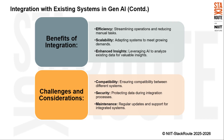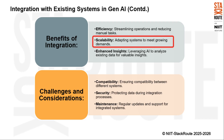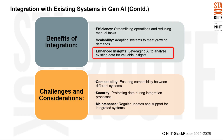The benefits of integration in Gen AI include: efficiency — by streamlining operations and reducing manual tasks, organizations can save time and resources, allowing employees to focus on more strategic activities; scalability — integrated systems are better equipped to adapt and grow with increasing business demands, ensuring smooth scale-up without major disruptions; and enhanced insights — by leveraging AI to analyze existing data, organizations can gain valuable insights that inform better decision-making and drive innovation.